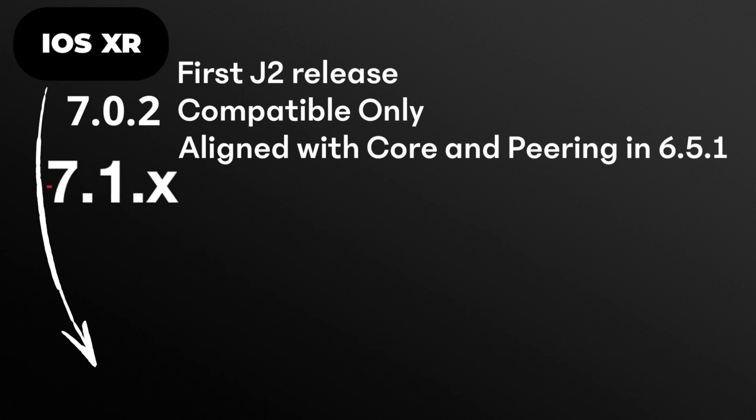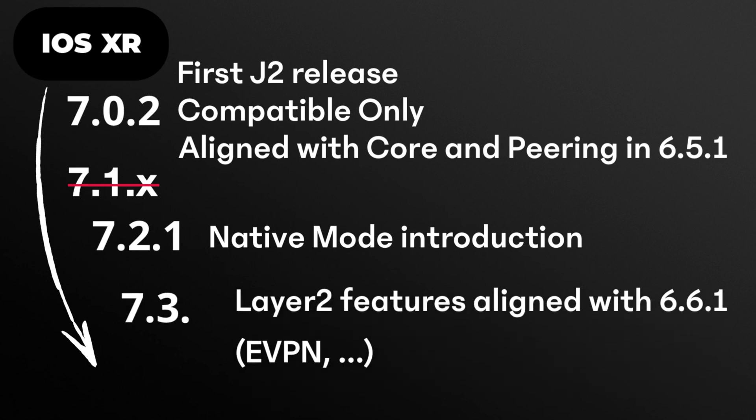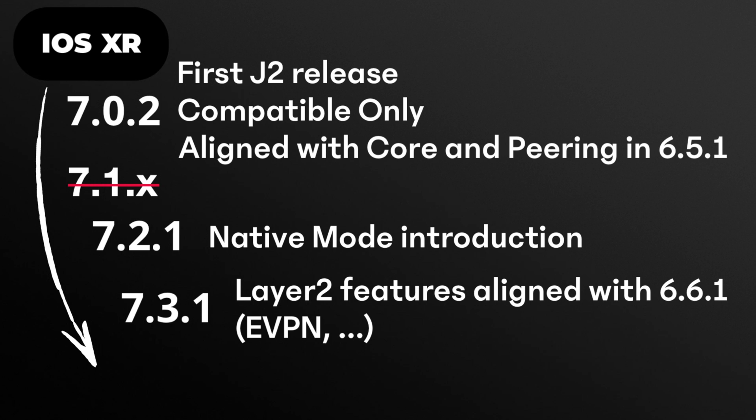That means routing for IPv4, IPv6, MPLS, LDP, RSVP-TE, L3 VPN, and IP multicast. IOS XR 7.1 was not a vehicle for J2 — it works fine for J and J Plus but not J2, so let's set it aside. In 7.2.1 we introduced the native mode and added some baseline Layer 2 features. IOS XR 7.3.1 continues in the same vein with much more in the L2 category, including quite a lot of EVPN features with an XR 6.6.1 reference point.